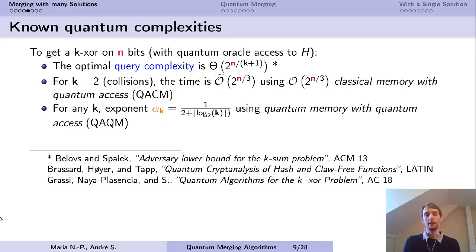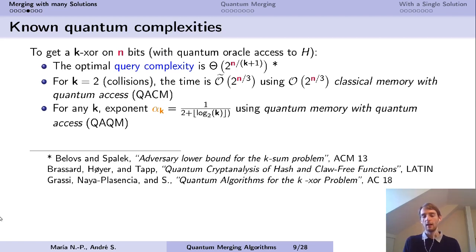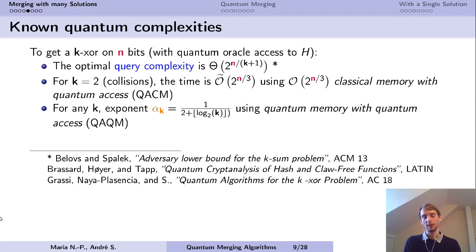In the quantum setting, there is a similar query complexity. We are given quantum oracle access to the function h. The optimal query complexity is 2 to the n over (k+1) instead of n over k, as shown by Bialski-Spalek. For any k, previous algorithms give time complexities such as n over 3 for collision-finding instead of n over 2, and an exponent of 1 over (2 + log2 of k) instead of 1 over (1 + log2 of k) for any k. These are algorithms that use quantum-accessible memory, though there are also results without it.